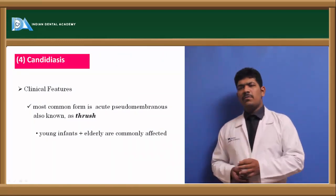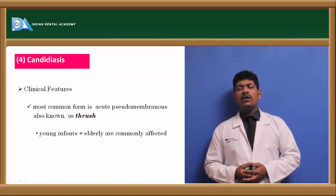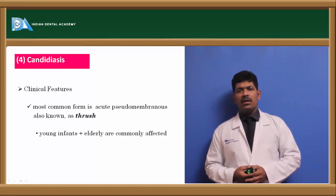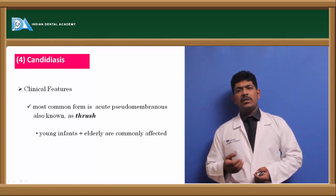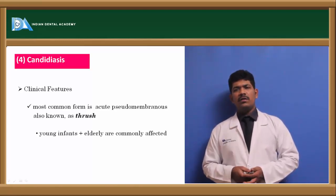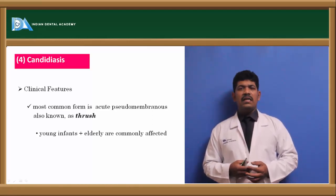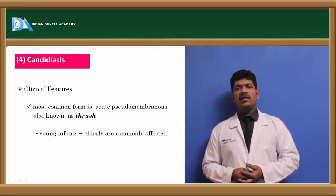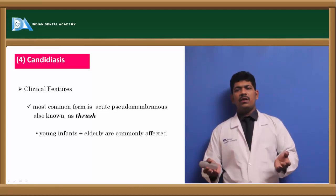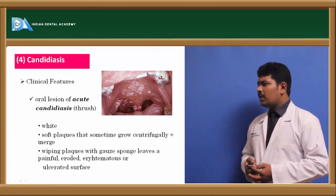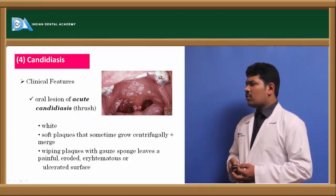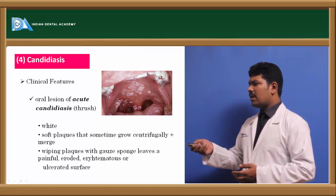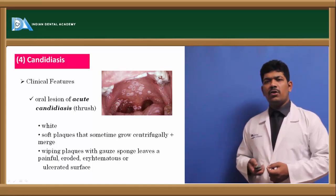The most common form is the acute pseudomembranous type, also called oral thrush. In this lesion there will be a white or yellowish pseudomembranous layer covering the entire area. This can be peeled away on slight pressure, revealing reddish areas below. Oral thrush is very commonly seen in elderly people or young infants, both of whom have lowered immunity. You can see the pseudomembranous whitish or yellowish plaque-like areas on the palate, which can be easily wiped away revealing eroded or erythematous areas.